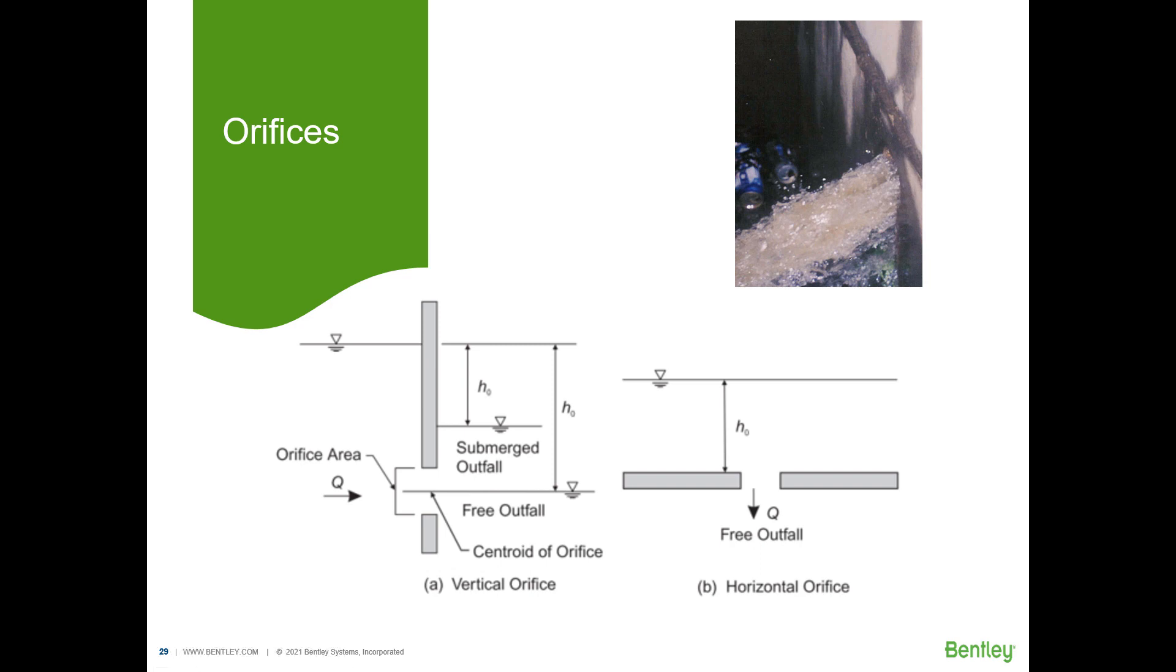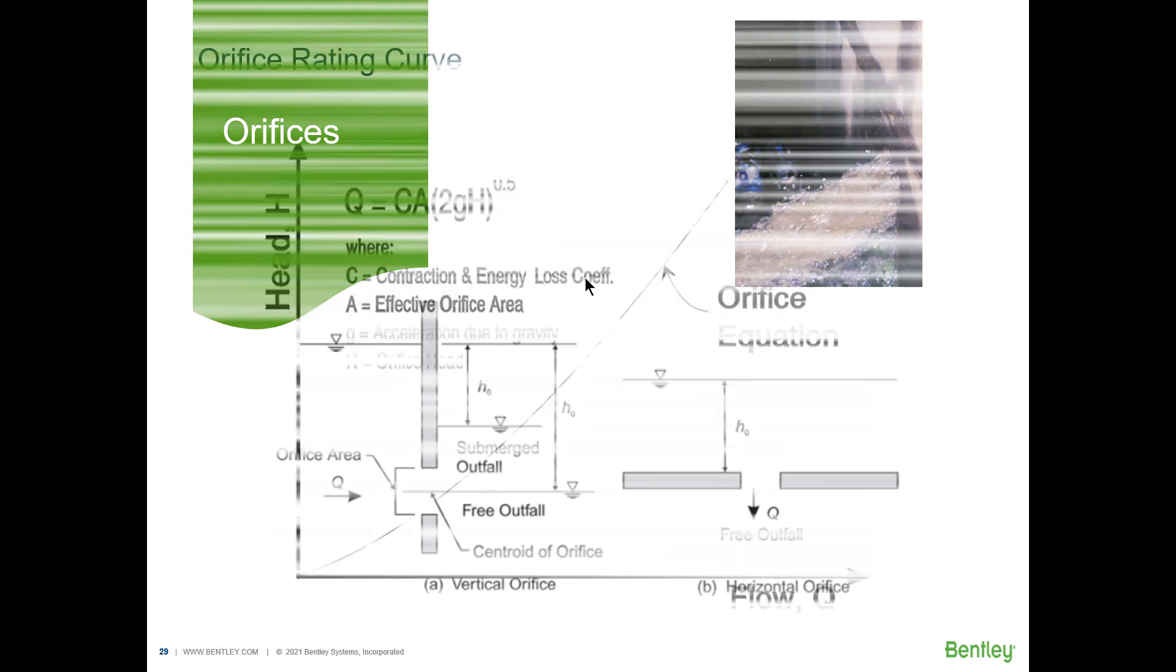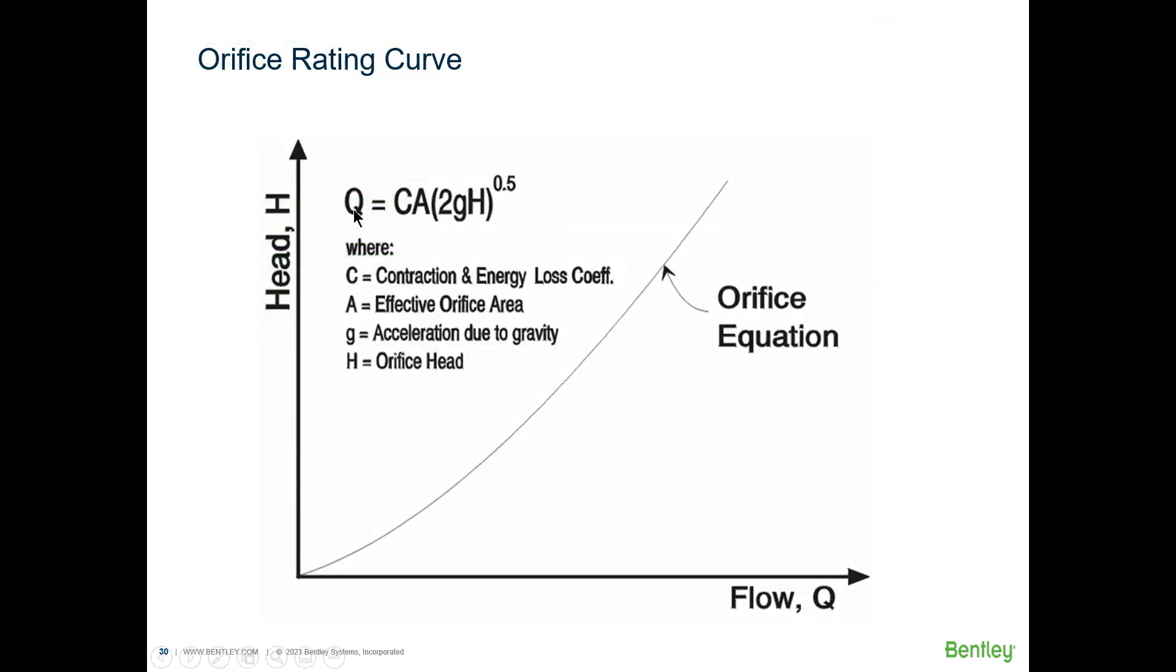How about orifices? Flow through an orifice starts when the water level reaches the orifice and then it increases as the water level in the pond increases and therefore the water pressure on the orifice. If you want to look at the flow equation through an orifice it's here. We can see what the rating curve through an orifice is and it's generally a steep sloping curve.